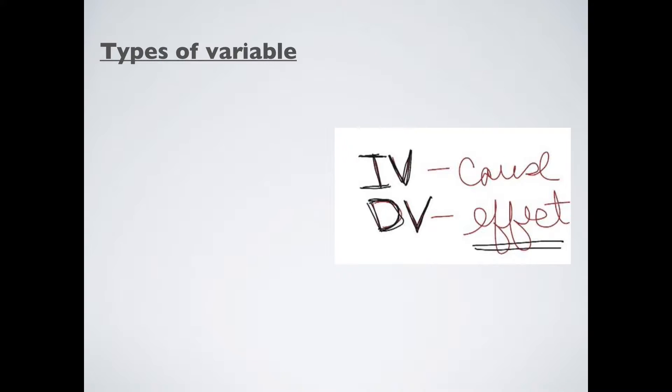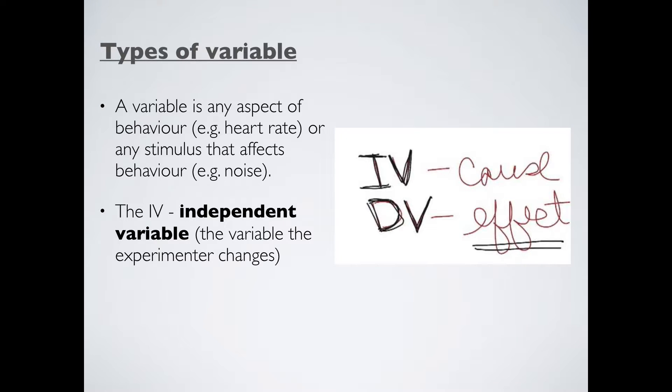So how are we going to do this and study cause and effect? Well, to do this, we need variables. There's two basic types of variable. Now a variable is any aspect of behavior, so heart rate could be a good example, or it's any stimulus that affects that behavior, for example, noise. In an experiment, we have two key types of variable. They are the IV, the independent variable. That's the thing that we change, so in this experiment, that is the cause. And the opposite of the IV is the DV, the dependent variable, the variable that the experimenter is going to measure. In this case, that's the effect. So we change the IV and we note down any effect it has on the DV.